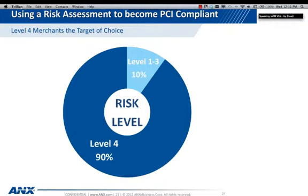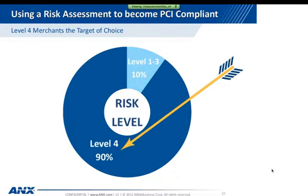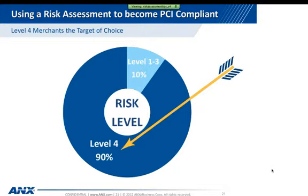Most of you on the call are level 4 merchants. According to the PCI DSS, a level 4 merchant is someone that processes less than 20,000 e-commerce transactions and less than 1 million total transactions in a year. Although level 4 merchants are smaller and process fewer transactions with credit cards, they are by far the top target of cyber criminals today. In fact, 90% of security breaches occur at the level 4 level. These criminals target locations that are most likely to be unprepared. Most level 4 merchants don't have dedicated IT staffs, making it easier for cyber criminals to penetrate your environment and drop malicious malware into your system.